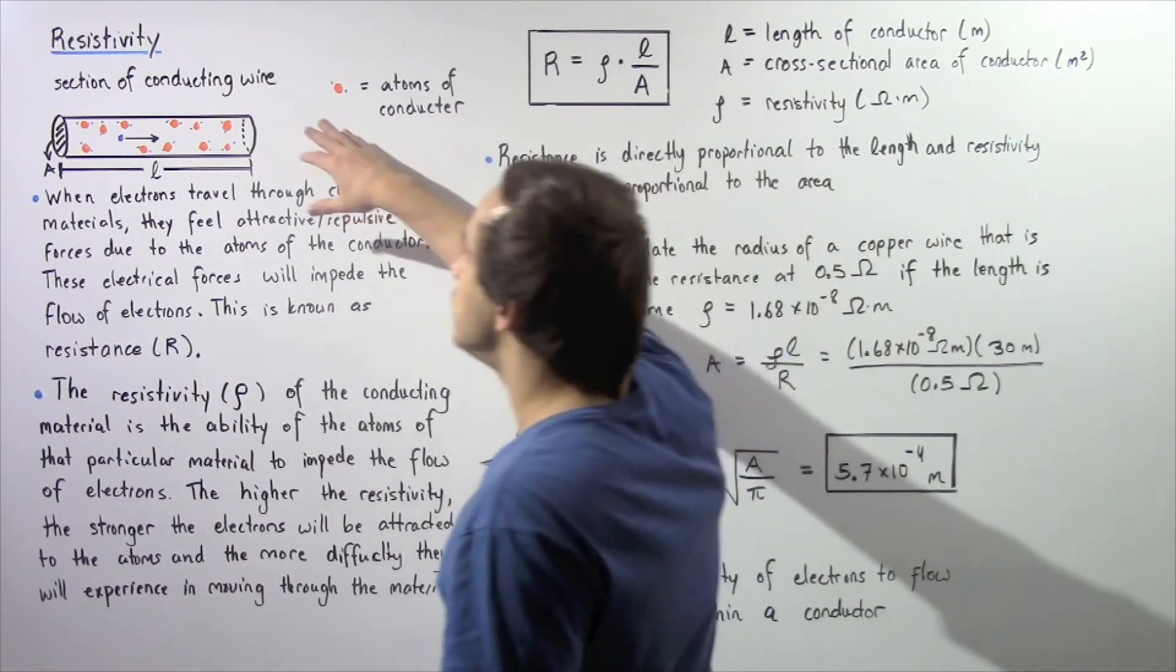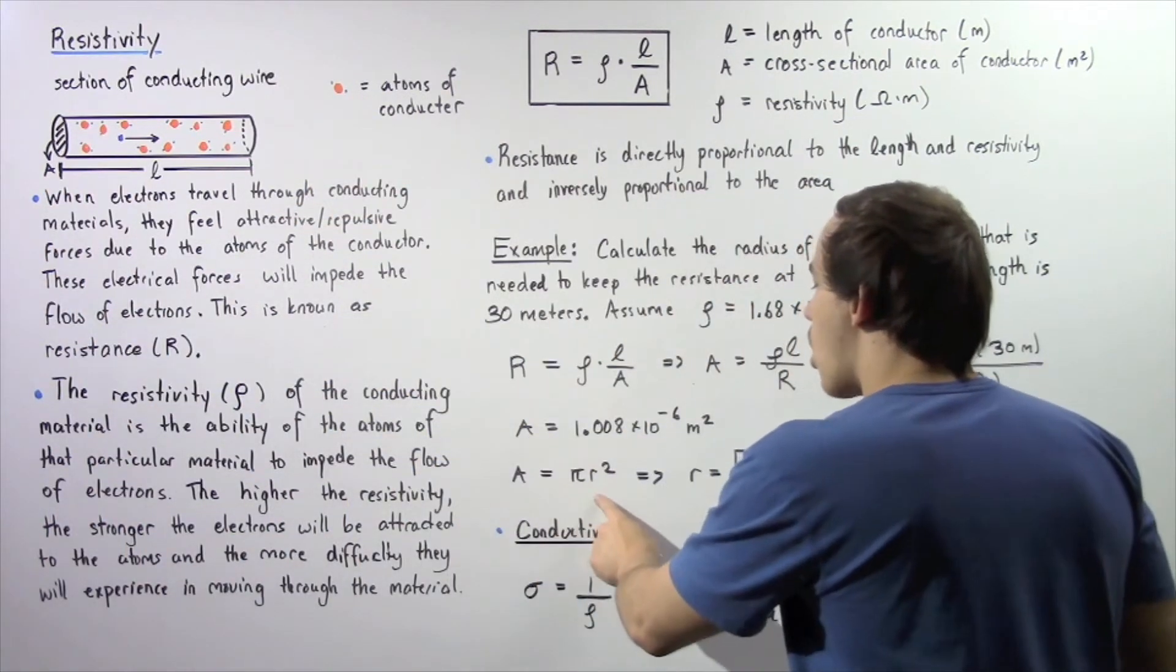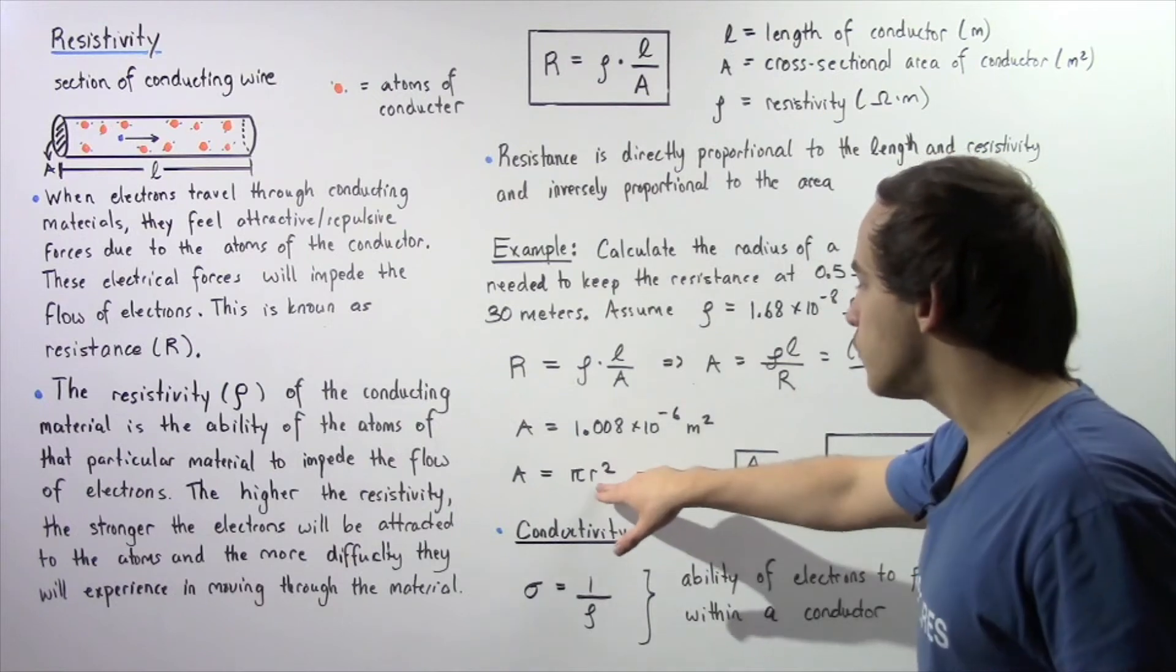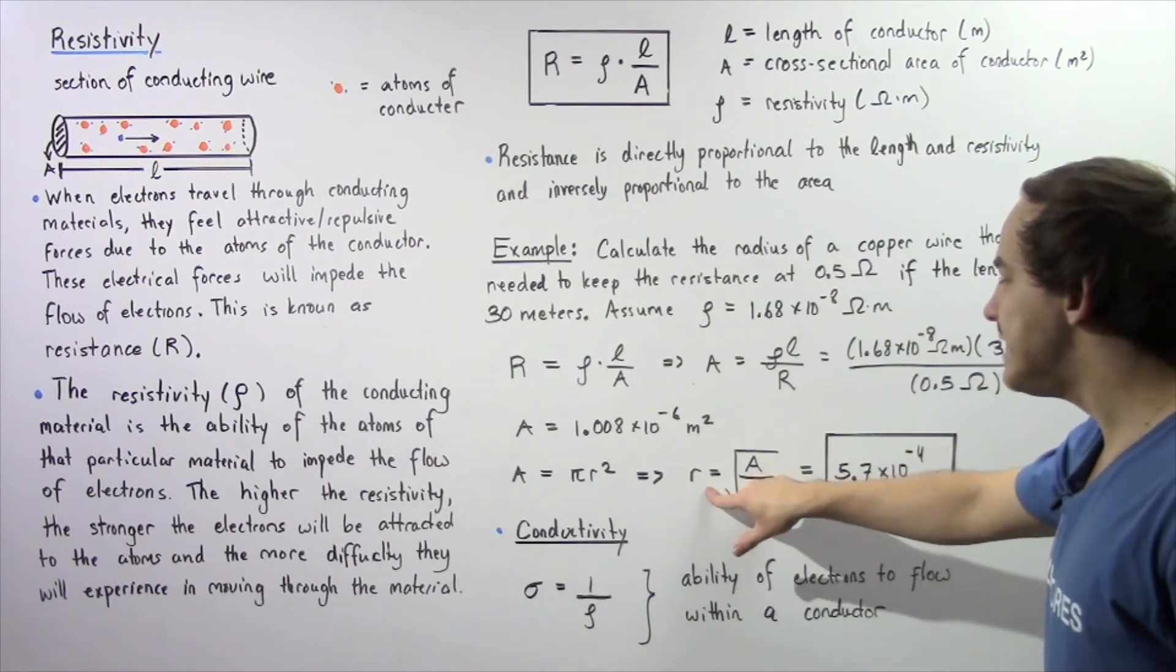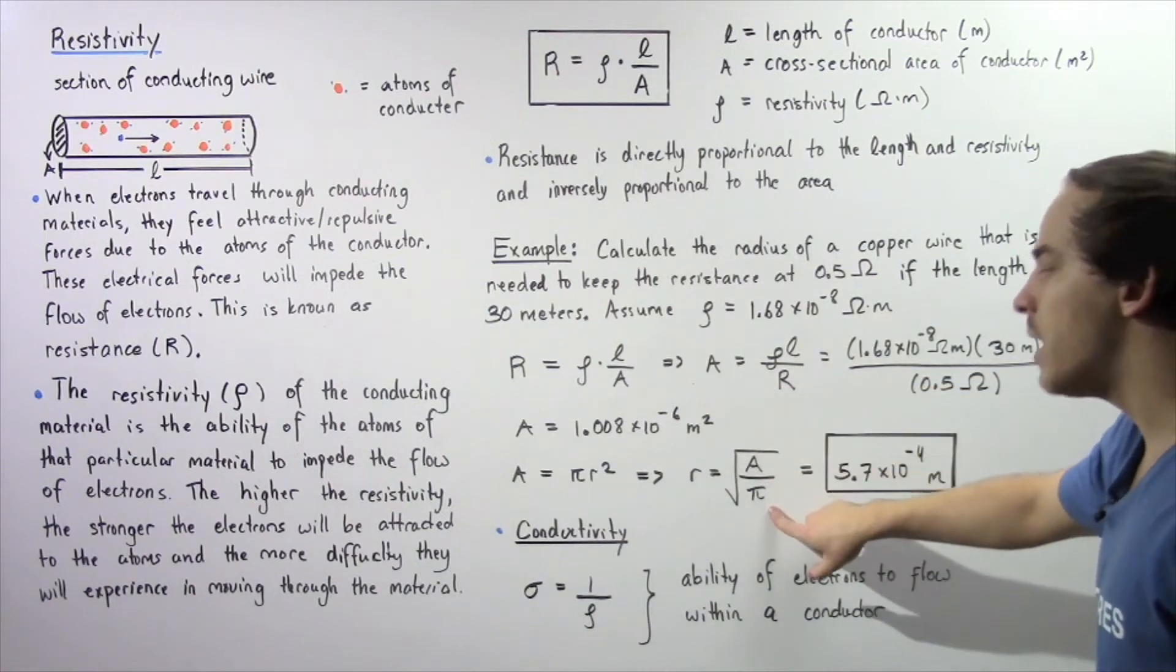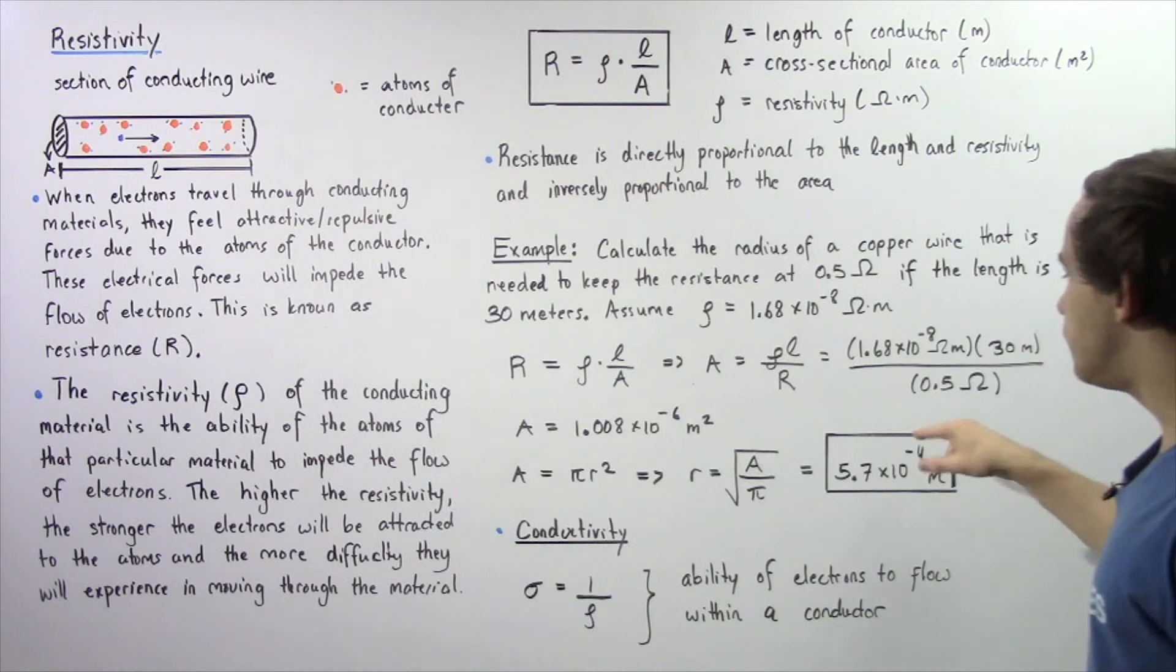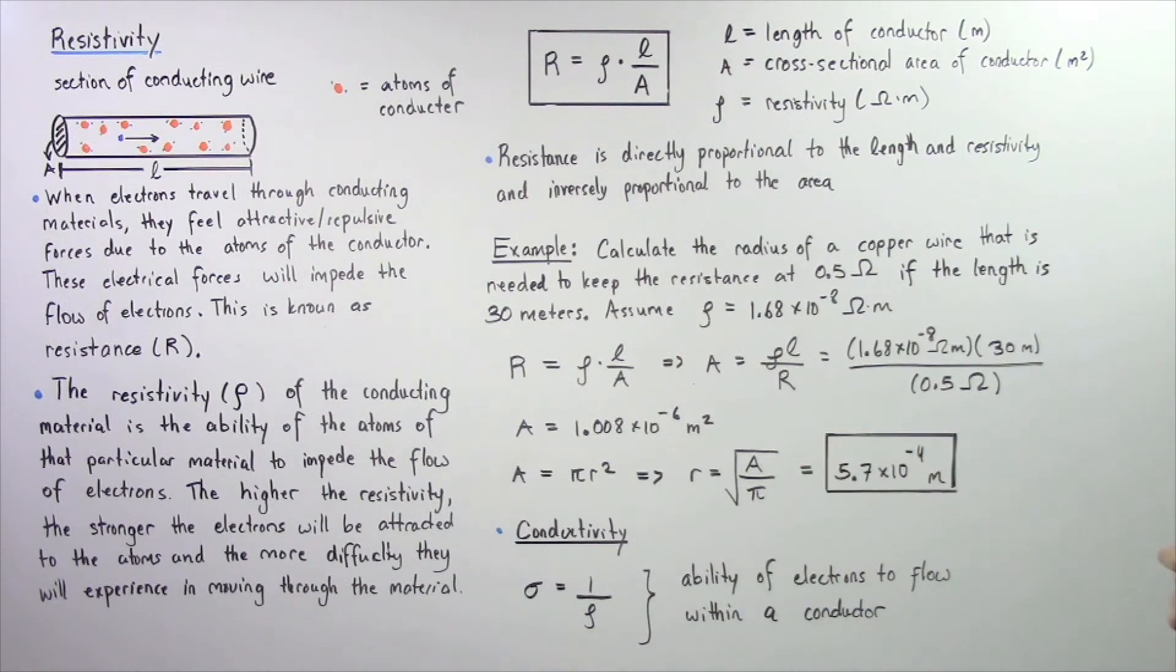We're going to make the assumption that our wire is cylindrical, so that means the area is given by πr². We solve for r: r equals the square root of the area divided by π. We plug in the area found earlier and we get about 5.7 × 10⁻⁴ meters as the radius of our conducting wire.